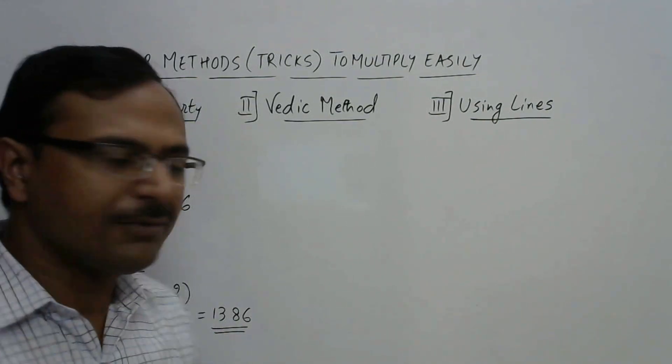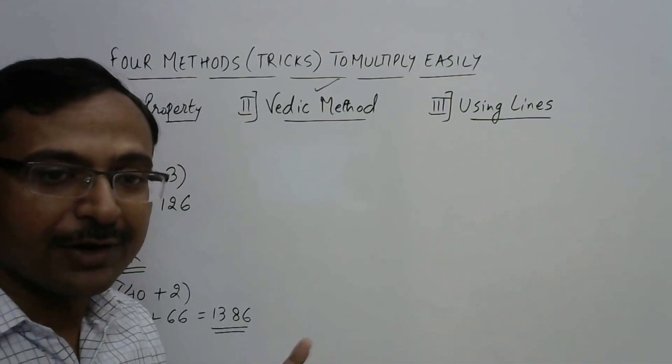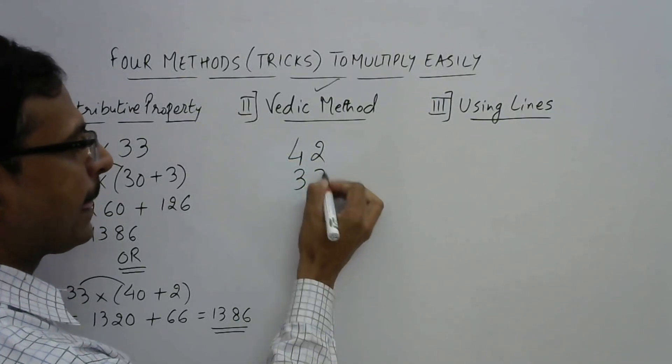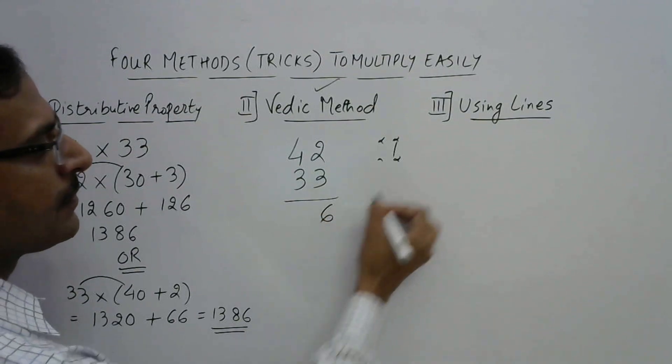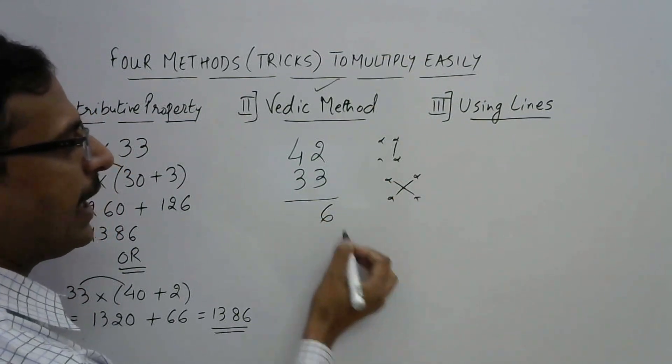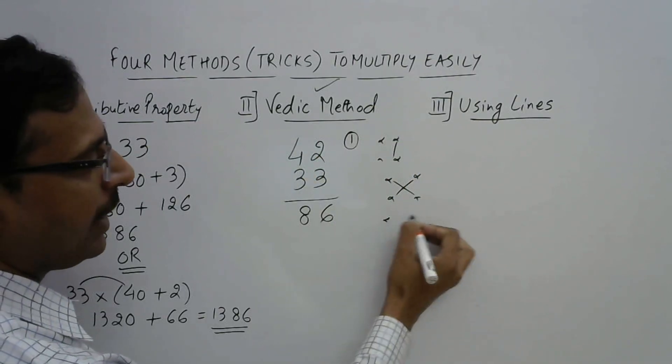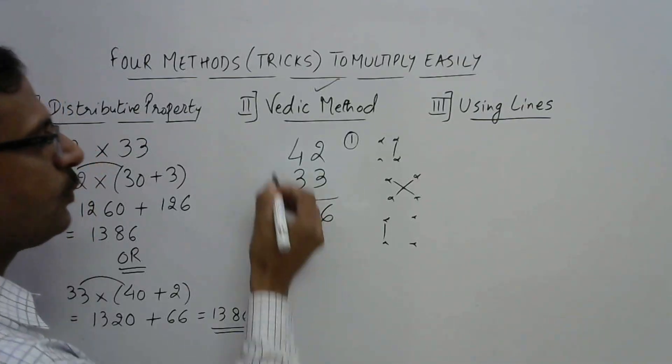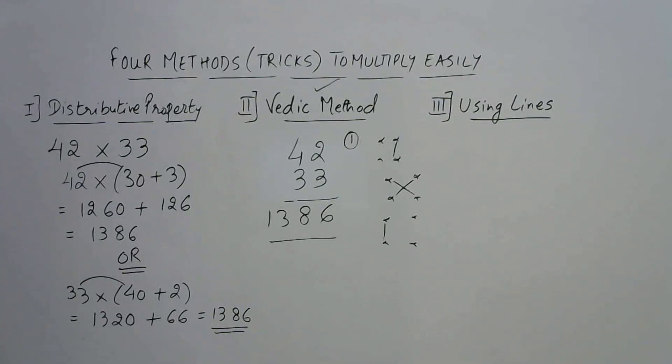Now we use the Vedic method very very simple and I prefer this method in all my calculations which I do in whatever work I am doing. See 42 into 33. So the first step multiply these 2, 3 times 6, no carries. Second step cross multiply and add. So 12 plus 6 is 18, 8. Now I have to remember this one carry. And final step multiply these 2, 4 times 3 is 12 and add the one carry 13, 1386 is the answer which I got through the previous method. So again Vedic method proves to be the best method because it involves least amount of time consumption.